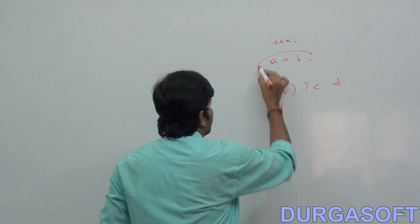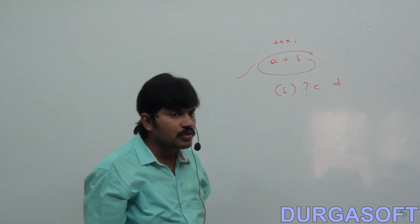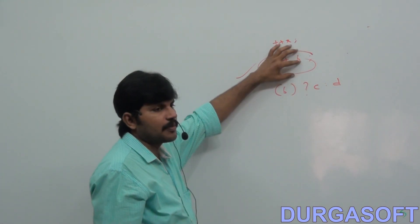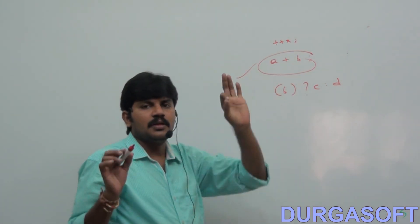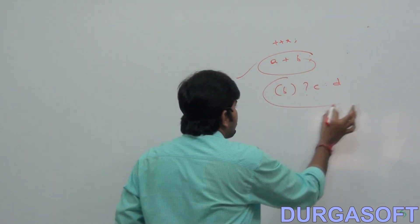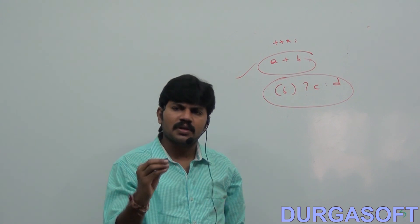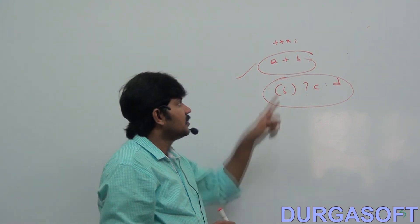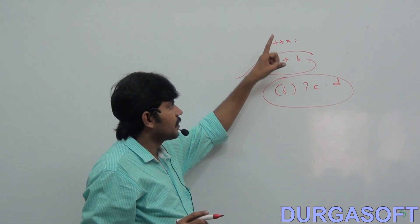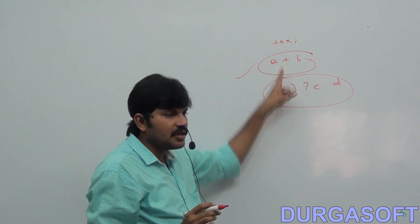After unary operators, binary operators come into the picture, so the next priority goes to binary operators. After binary operators, least priority goes to ternary operators. This is a thumb rule in any programming language: unary operator gets highest priority, then binary operator, then ternary operator.